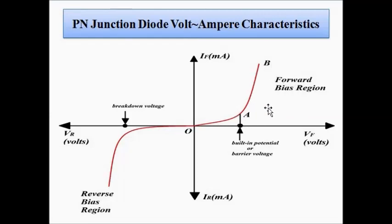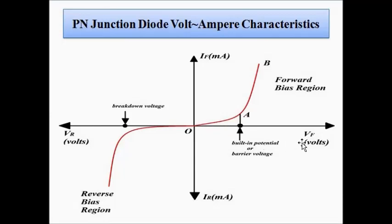In the forward bias region, the x-axis shows forward voltage in volts and the y-axis shows forward current in mA. As you increase the forward voltage from 0, up to the built-in potential (also called barrier potential), the increase in forward current is very small. The slope is very low because of the predominance of the depletion layer effect resulting in the barrier voltage.